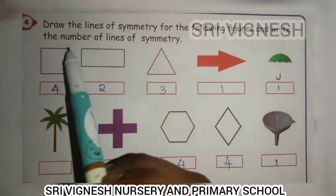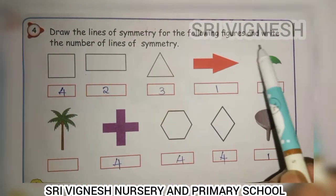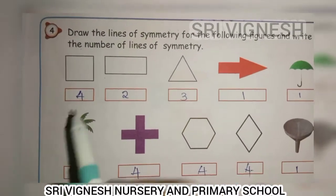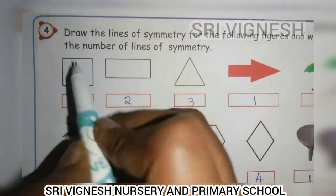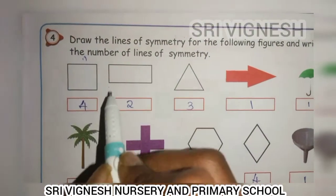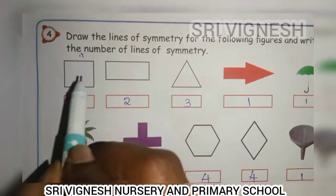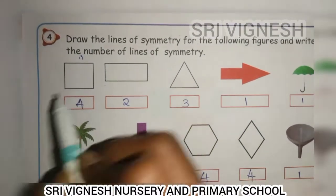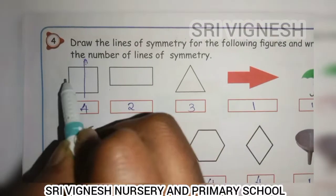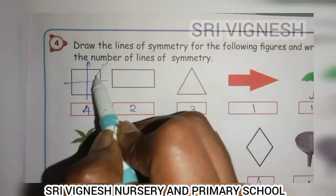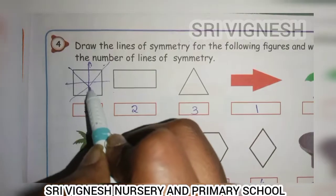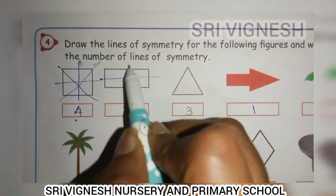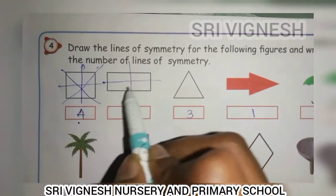Next page: draw the lines of symmetry for the following figures and write the number of lines of symmetry. Let's see the square first. In this picture, we will see the first line of symmetry. The square has lines 1, 2, 3, 4 — four lines of symmetry. Rectangle has one, two — so two lines of symmetry.